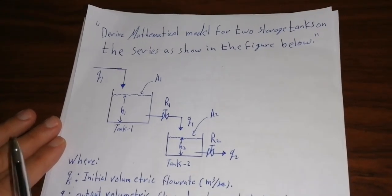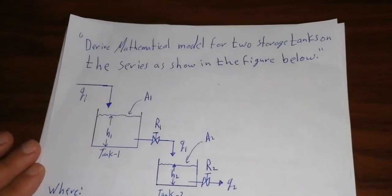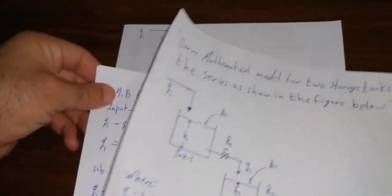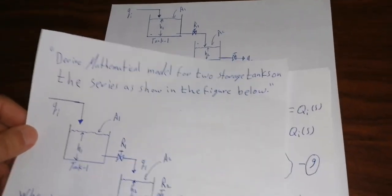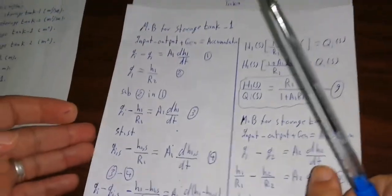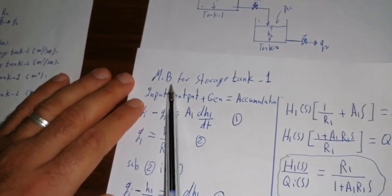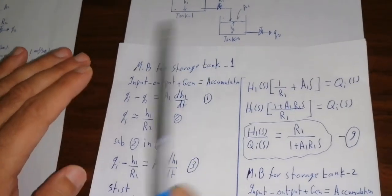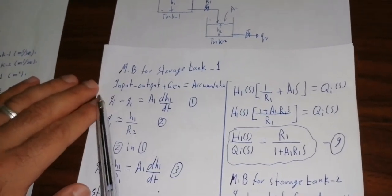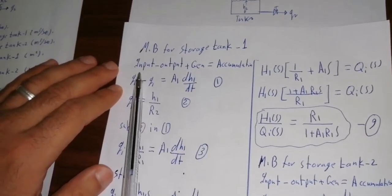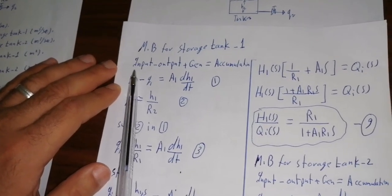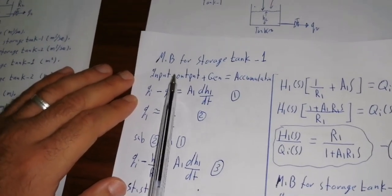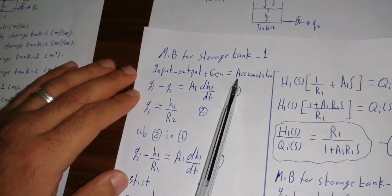Now let us derive the mathematical model for these two storage tanks. We must make a material balance for storage tank 1. As stated, we start from the first unit process, finish it, then go to the second, and so on. We start from this sentence — we call it the magic sentence in mathematical modeling: input minus output plus generation equals accumulation.